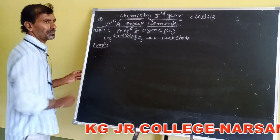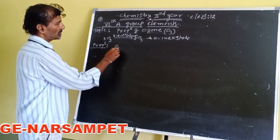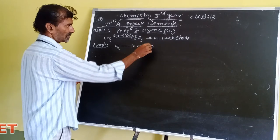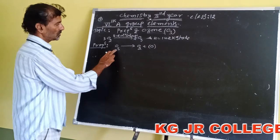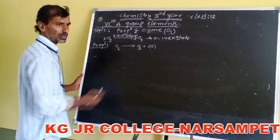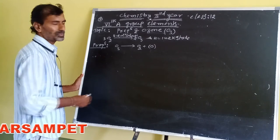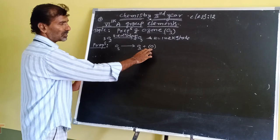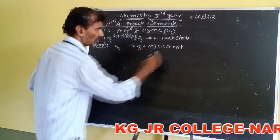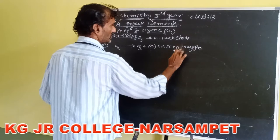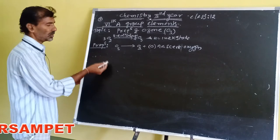Ozone acts as a powerful oxidizing agent. Ozone gives rise to O₂ plus nascent oxygen. It acts as a bleaching agent due to the release of nascent oxygen, which is the actual bleaching agent.